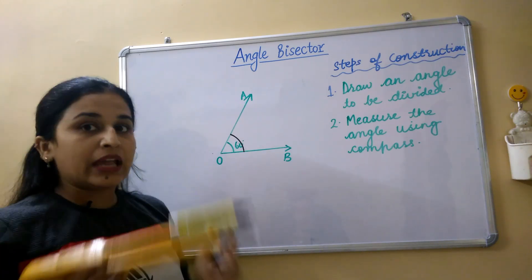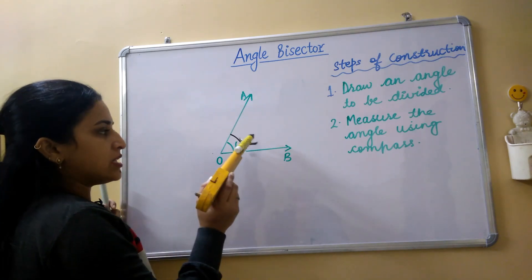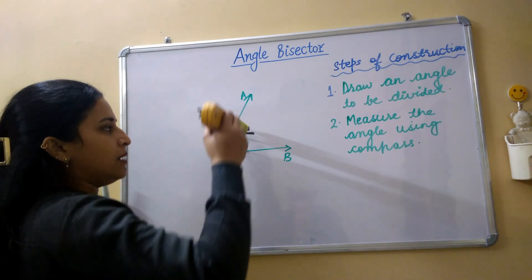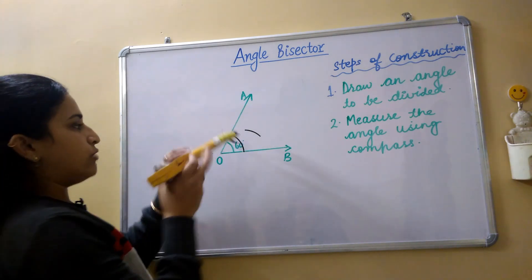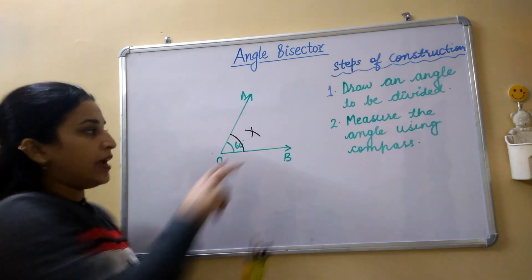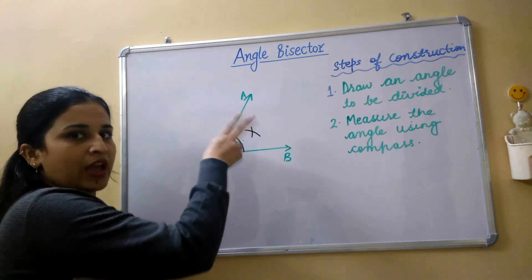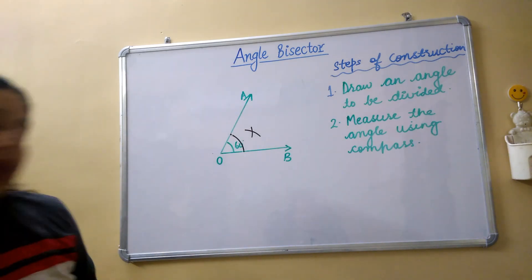And with the measurement that we have measured, we will give arc from both of the endpoints. So this is the first endpoint of the angle and this is the second endpoint of the angle.